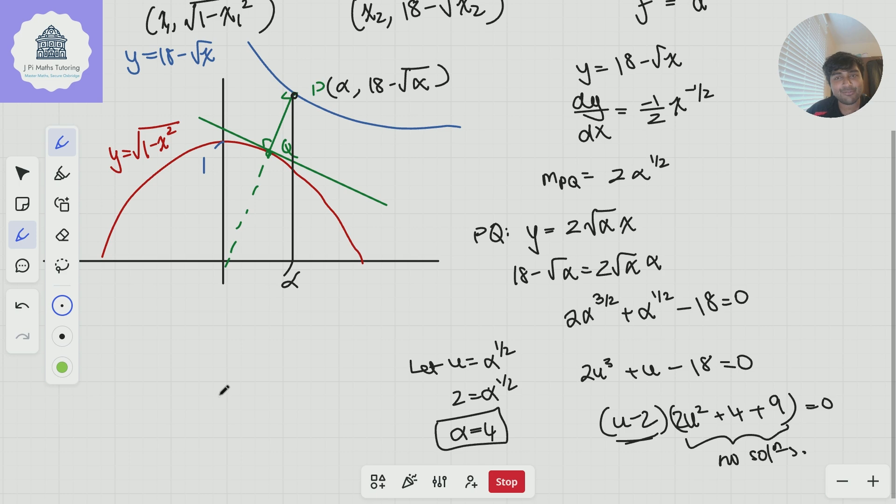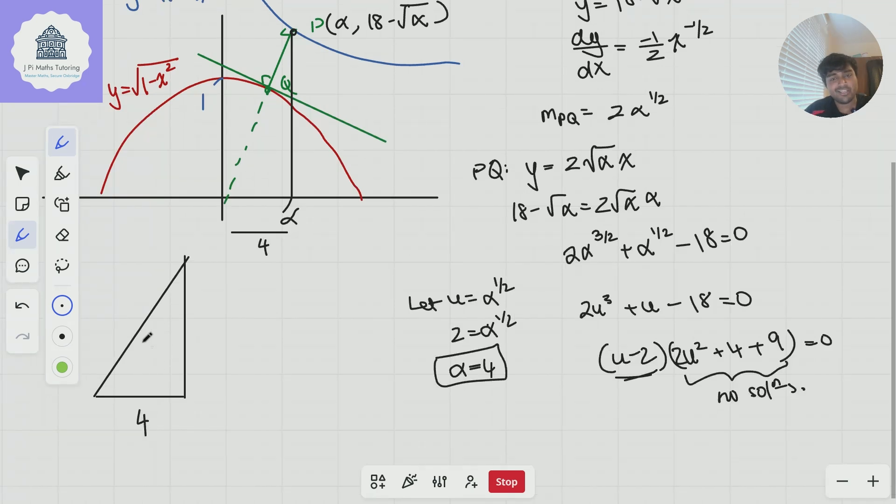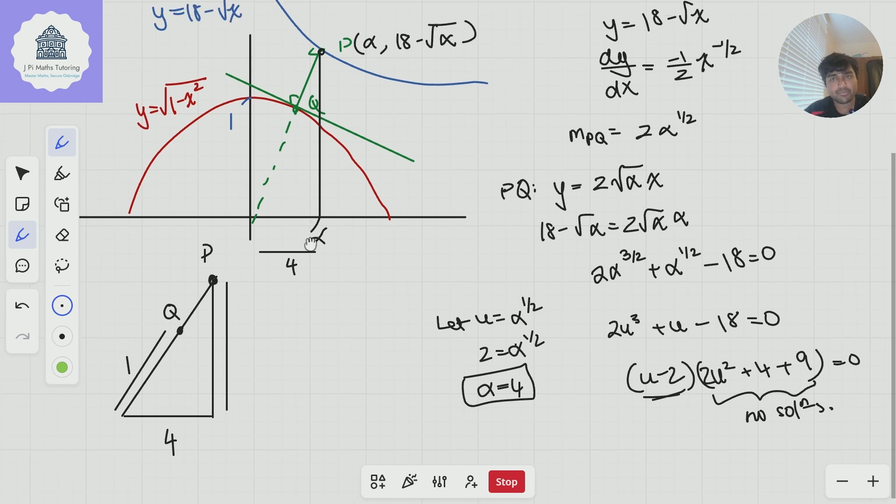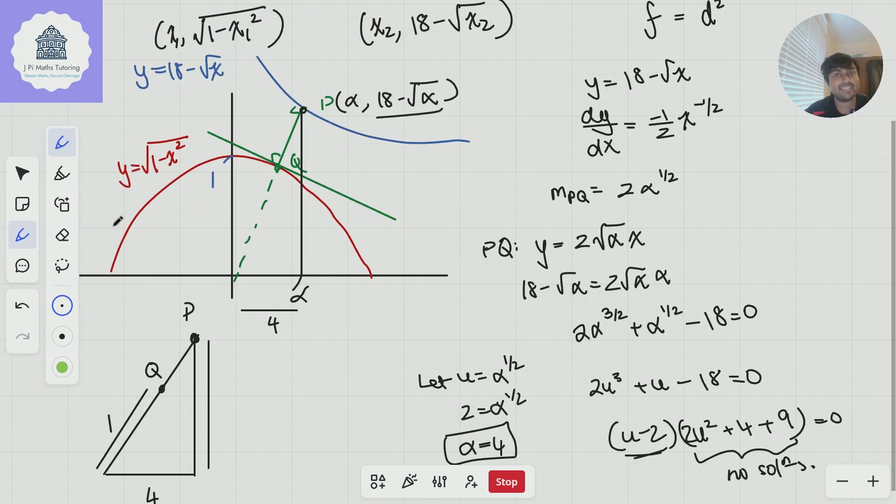So I can factor out (u - 2) and then you're going to get 2u² plus 4u plus 9. And very nicely, this has no further solutions, at least not in the reals. And that's what we're interested in. So we can conclude for sure that u equals two. And so alpha must be four. Amazing. So we get alpha equals four, which is lovely because now this length here is four. If I just zoom in on this triangle, we have this length here is four. Q is somewhere here. P is somewhere here. Remember, our goal is to work out the length PQ. What do we know about this length? Well, this length here is one. It's just the radius of our circle.